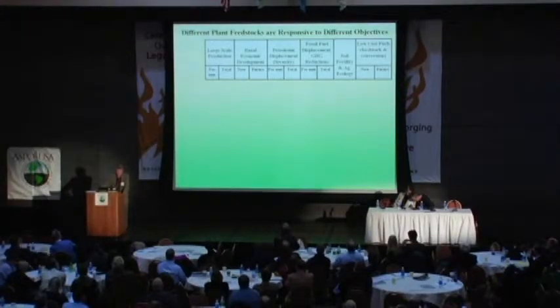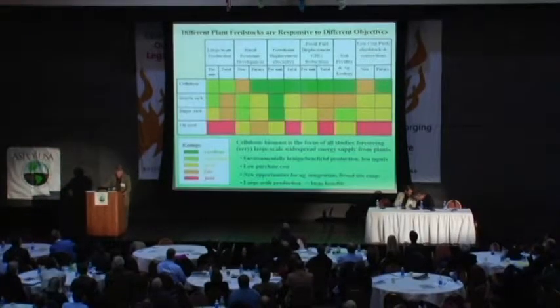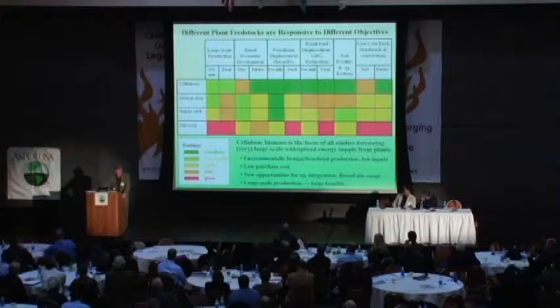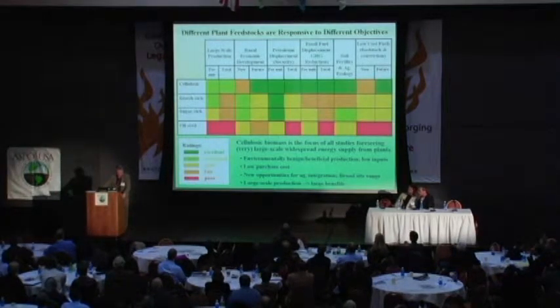Without going through each of these objectives, different feedstocks are responsive to different objectives, but there is agreement amongst virtually everyone who's looked at it. Cellulosic biomass is the focus of all studies foreseeing very large-scale, widespread energy supply from plants — with the possible exception, on a worldwide basis, of parts of the world that can grow large amounts of sugarcane. On this scale, cellulosics are the preferred, followed by sugarcane, followed by starch, followed by oilseed. All biomass is not created equal from the point of view of producing liquid fuels.